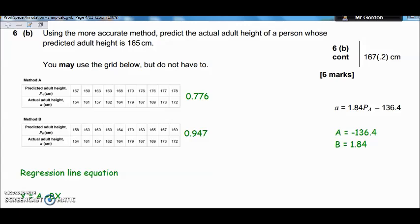Using the more accurate method, predict the actual adult height of a person whose predicted adult height is 165. Well, which one of those two methods, was it method A or method B, was the most accurate?